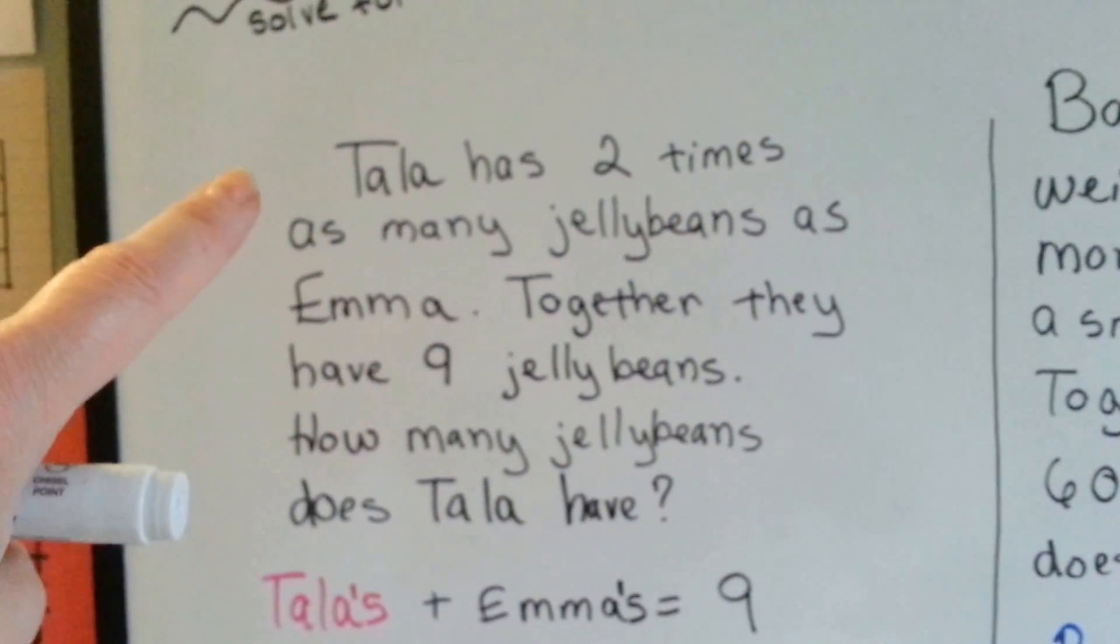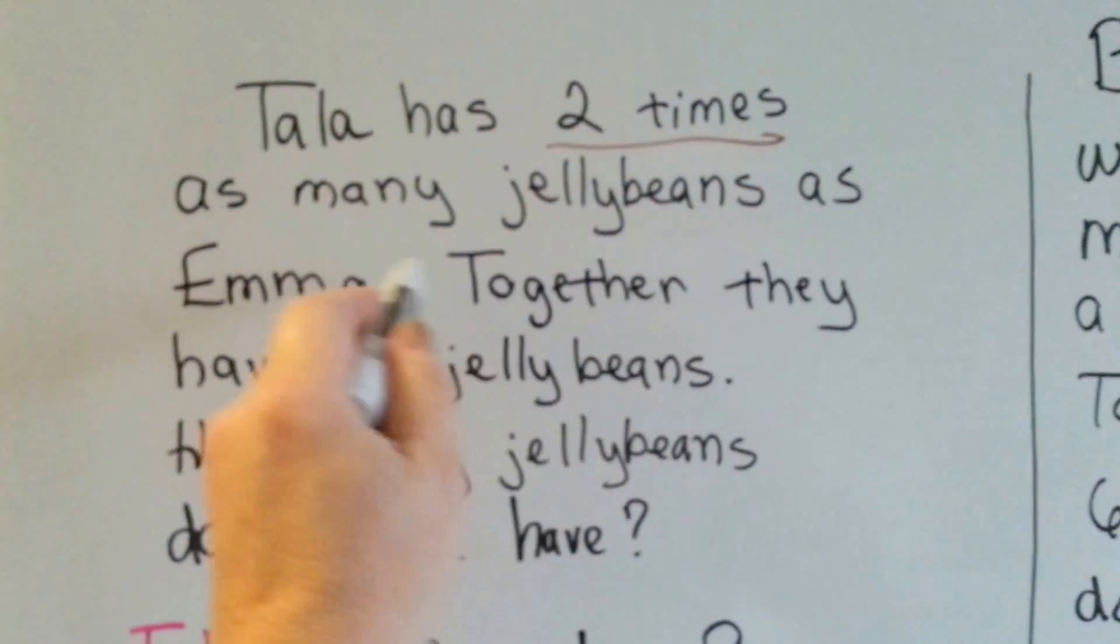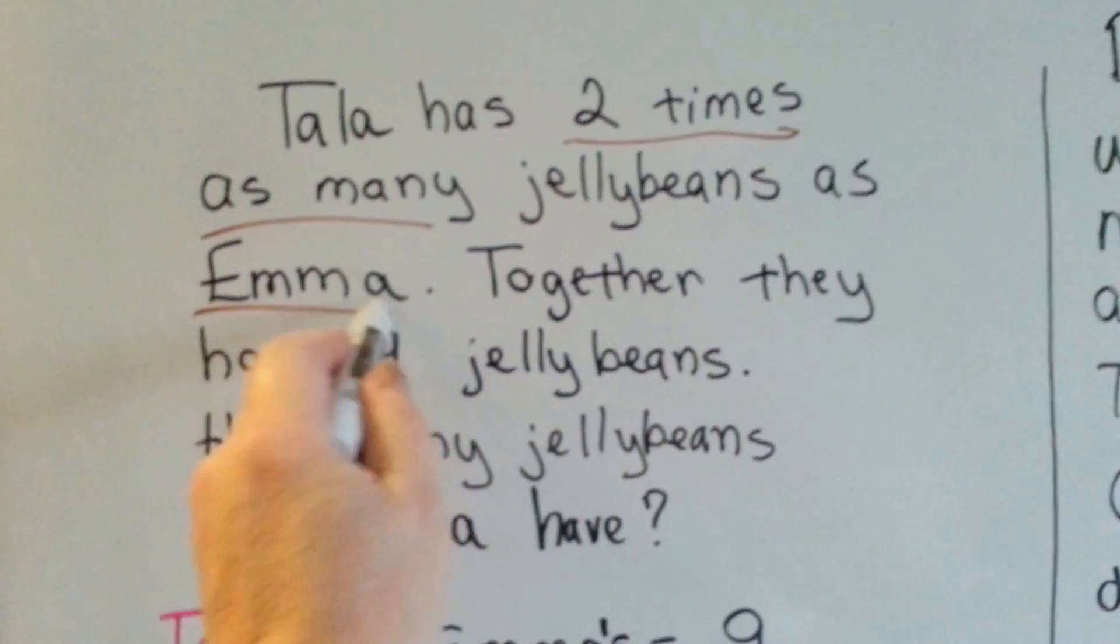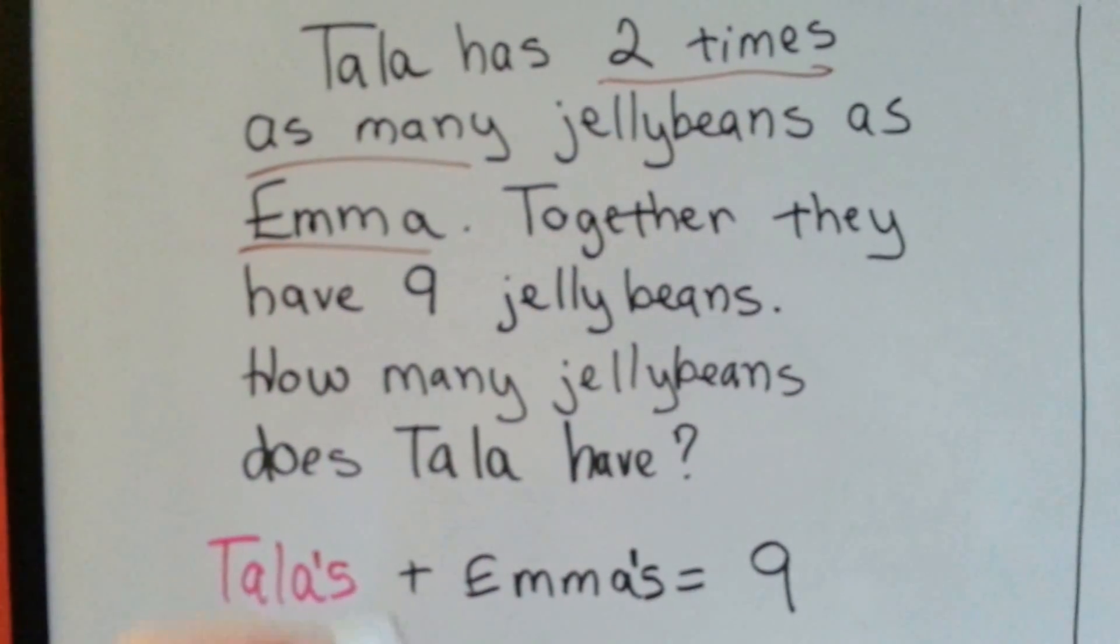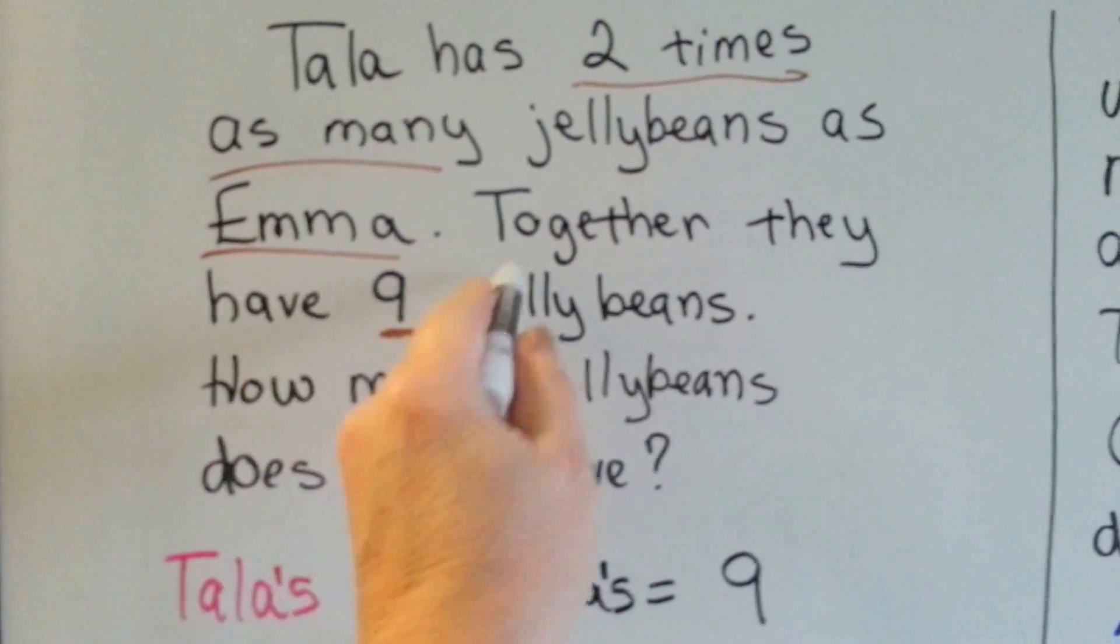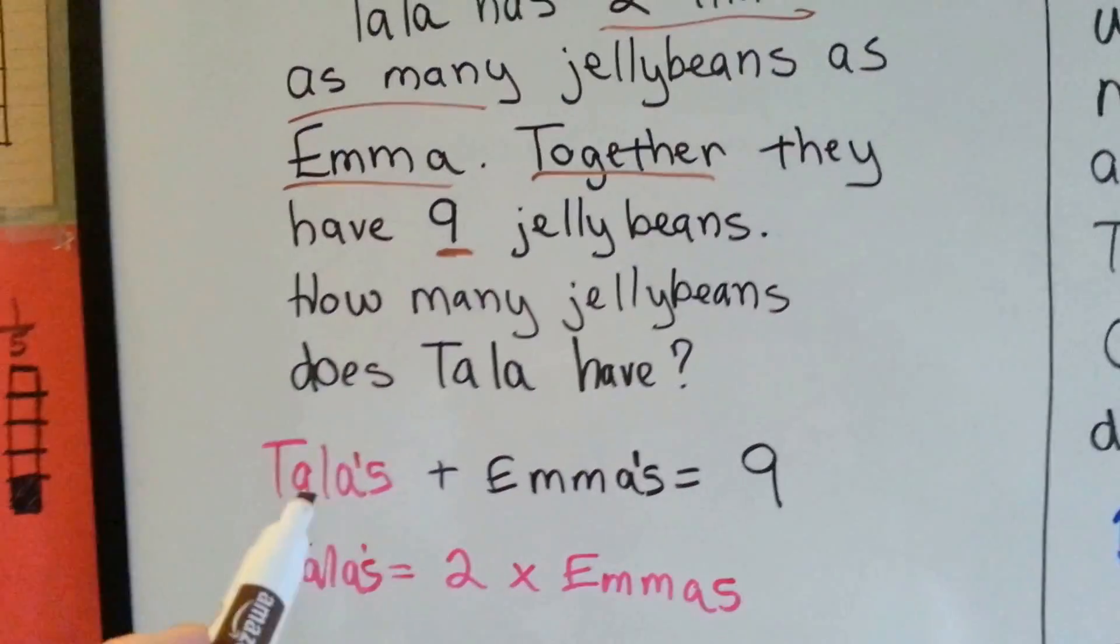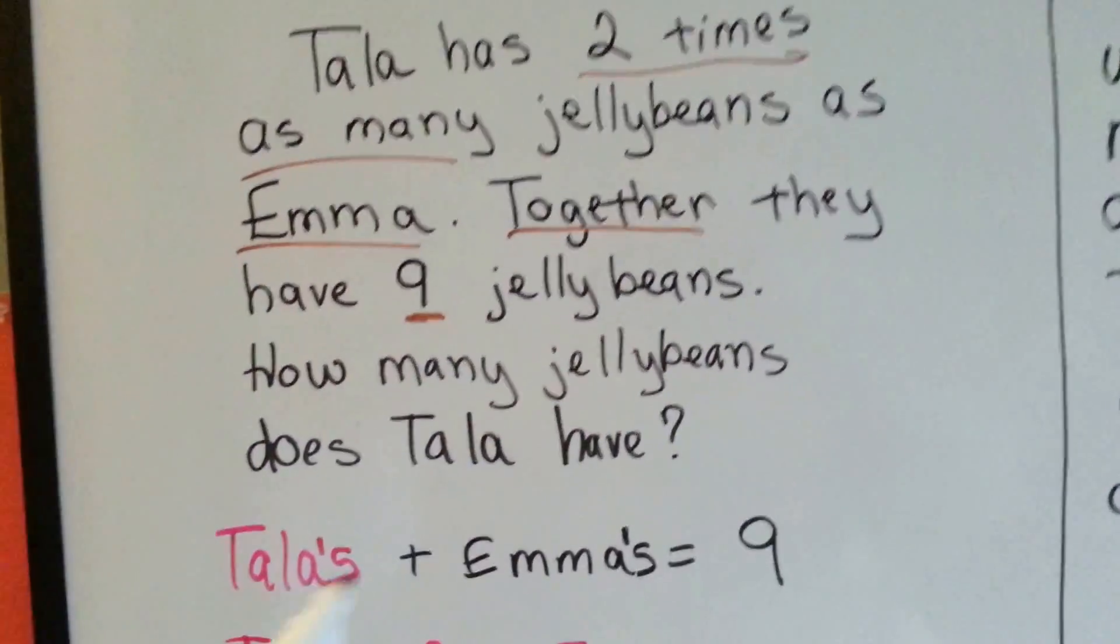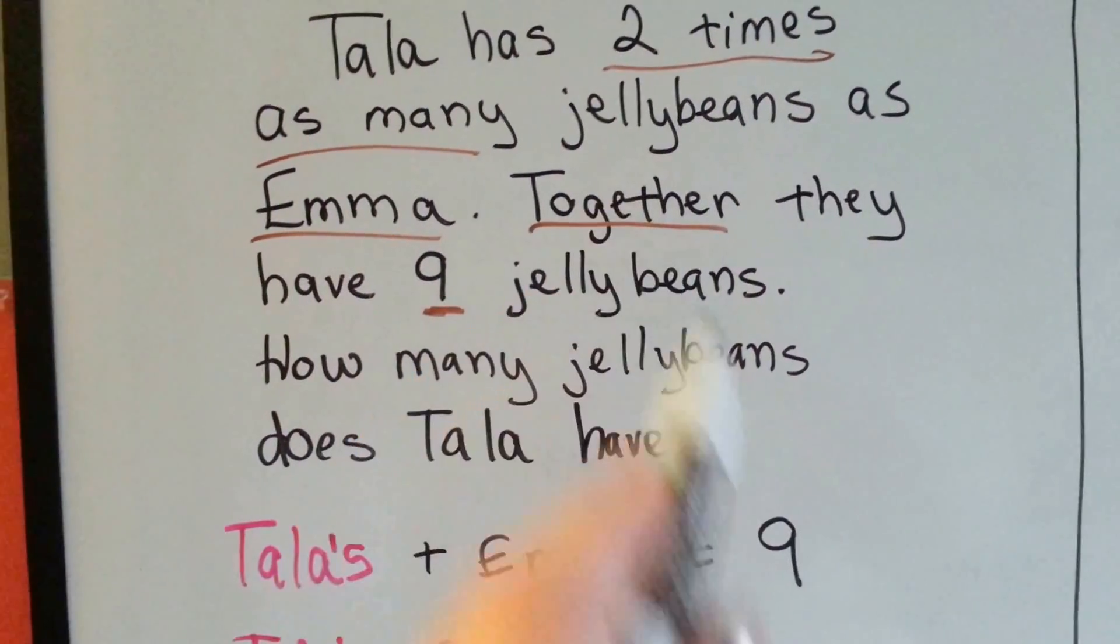Well, this is the information we know. We know she has two times as many as Emma. Two times as many. Together they have nine. So Tala's jelly beans plus Emma's jelly beans is nine. That's together.